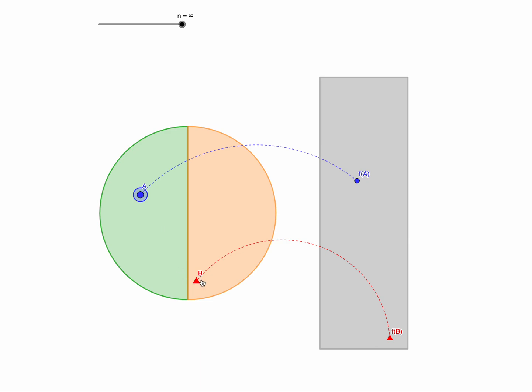Right? So we've got something which is almost everywhere continuous. It's two-to-one or it's not one-to-one. But it does map the circle to the rectangle in an area-preserving way. Now let's compare this with the loon map.